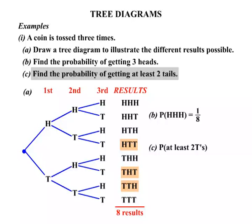All those showing two tails, but at least two tails would also include getting three tails. So it happens four times there out of eight. So the fraction, the probability is four over eight. And of course we can simplify that, break it down to one half.